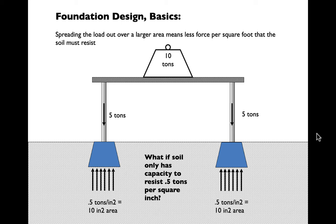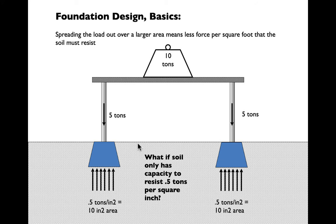For example: with a 10-ton weight on two columns at 5 tons each, and a soil bearing capacity of 0.5 tons per square inch, we need 10 square inches per column (10 × 0.5 = 5 tons). That's roughly a 3.5 × 3.5 inch footing — not very big. For a single 10-ton weight, that provides just enough capacity.